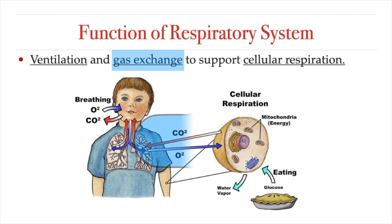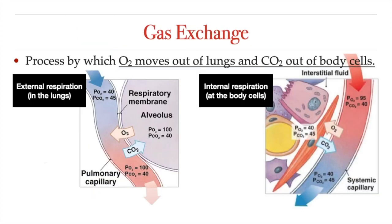The purpose of the respiratory system is to perform gas exchange. Pulmonary ventilation provides air to the lungs for this gas exchange process. Gas exchange happens at two sites in the body: in the lungs, where oxygen is picked up and carbon dioxide is released, and at the tissues and body cells, where oxygen is released and carbon dioxide is picked up. External respiration is the exchange of gases between our blood and the external environment, happening at the alveoli of the lungs. Internal respiration is the exchange of gases with the internal environment, which happens in all the tissues of the body.